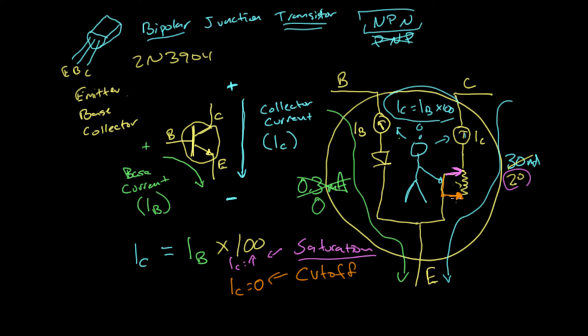And when it's saturated, it's just passing current through. And when it's cut off, it's not passing current through at all. And so this is why you'd sometimes hear transistors referred to not only as current amplifiers but also as switches.